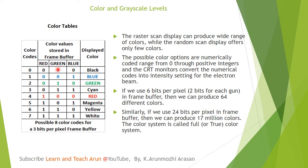Green color is 2 bits. For example, blue color is represented. The frame buffer is 6 bits per pixel, and the color gives 64 different colors.